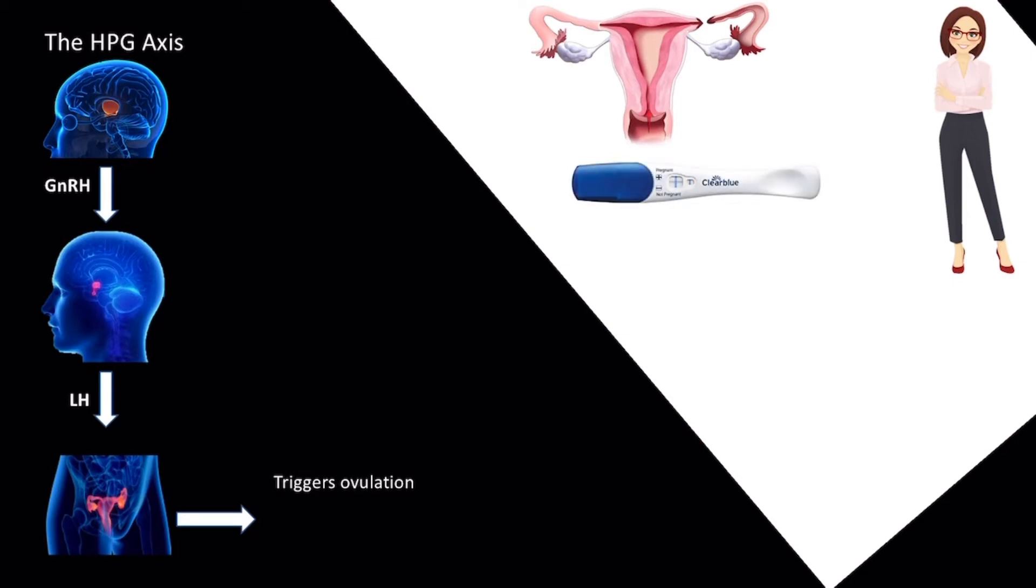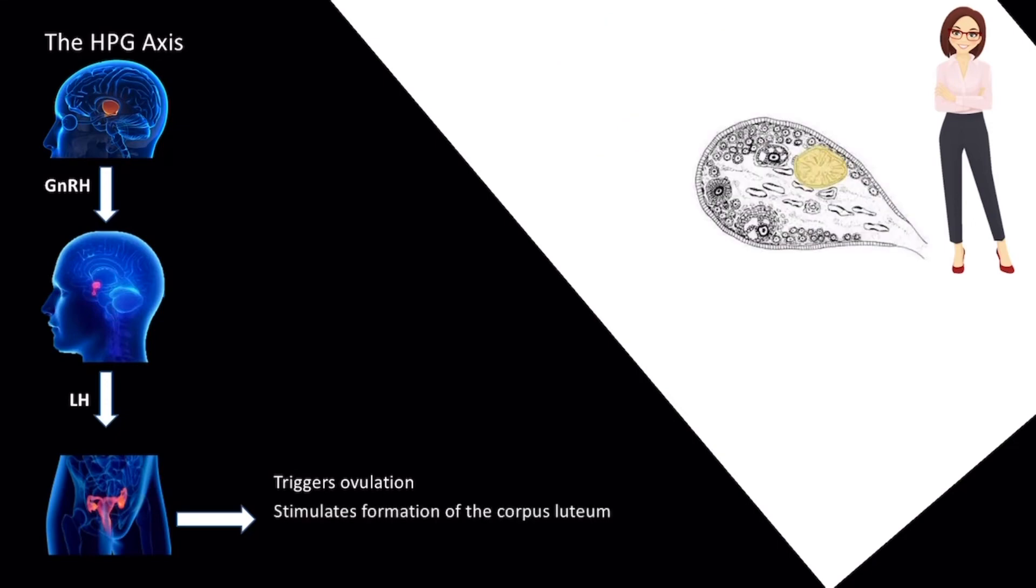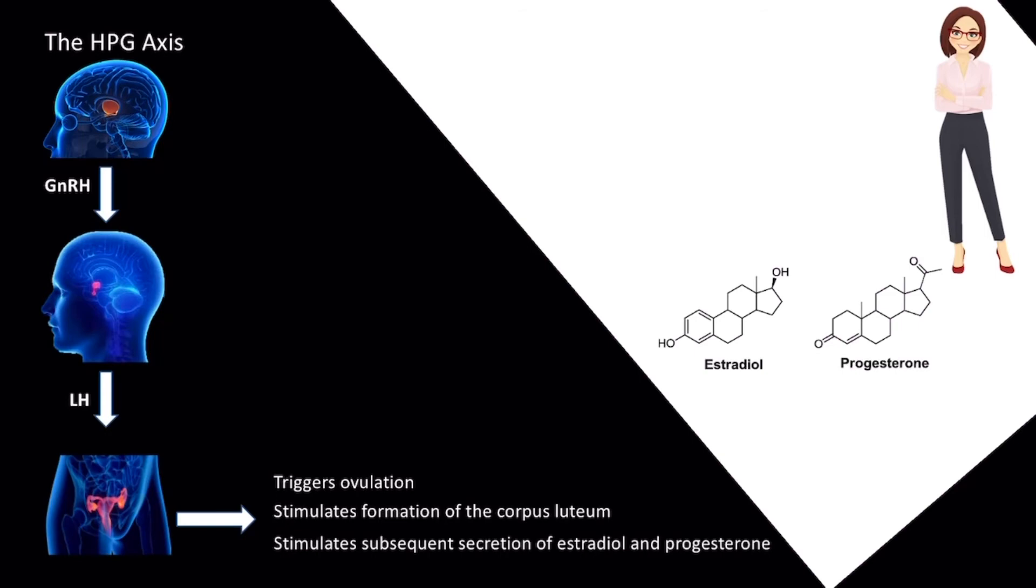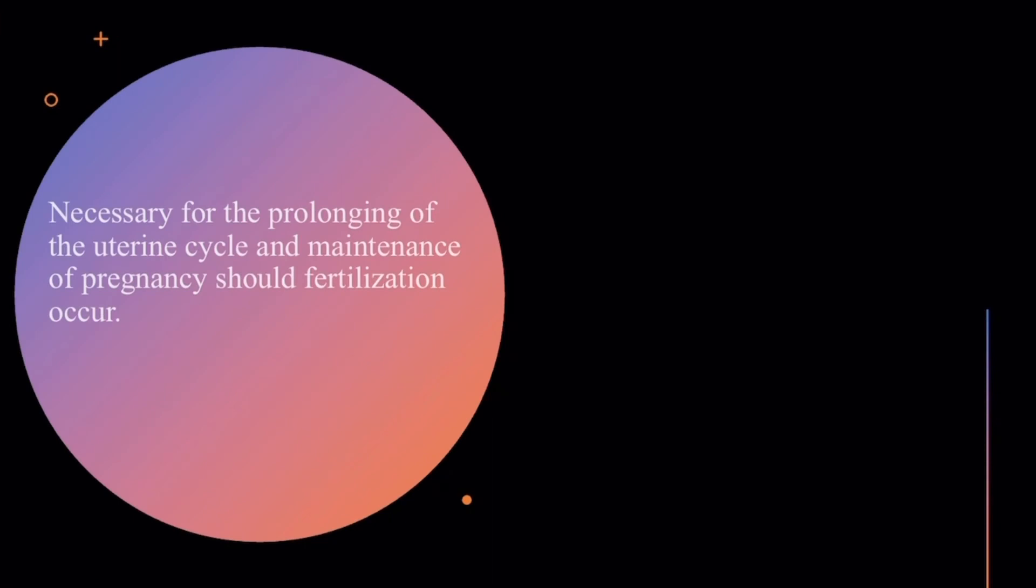Second, following ovulation, LH stimulates the formation of the corpus luteum and the subsequent secretion of estradiol and progesterone. This is all necessary for the prolonging of the uterine cycle and maintenance of pregnancy should fertilization occur.